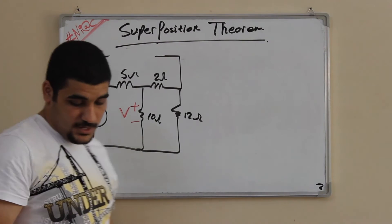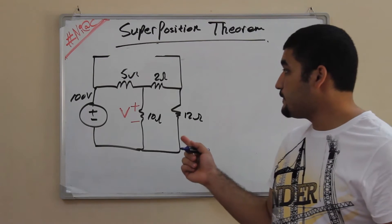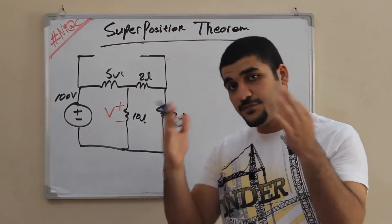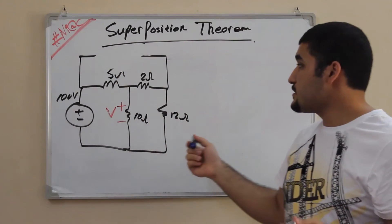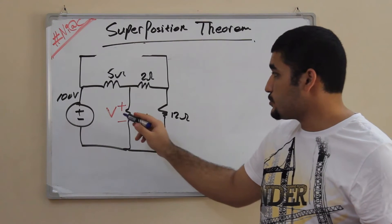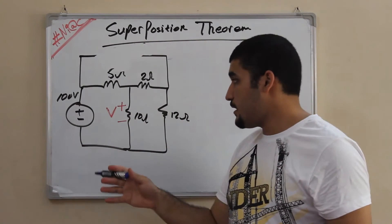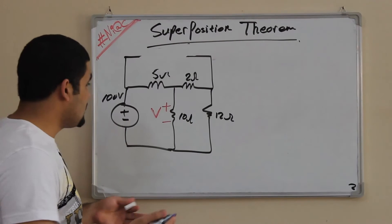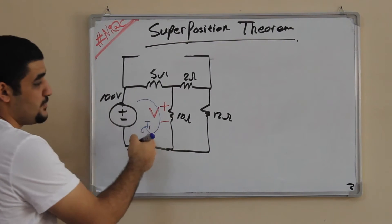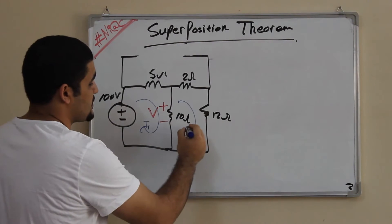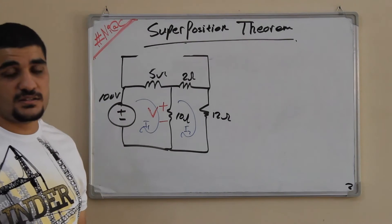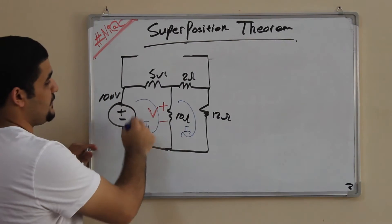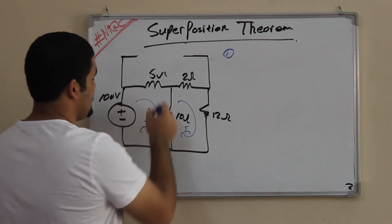Now you're going to find a method of solving this circuit. You now have a completely different circuit without that current source, so you need to find the voltage here using the methods we've explained. For example, I'm going to solve this using mesh analysis, assuming there is a loop here and a loop here. You can also solve it using nodal analysis — any method you like.